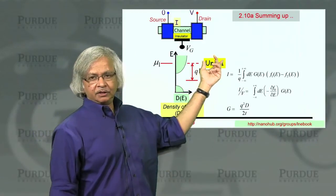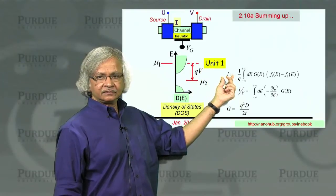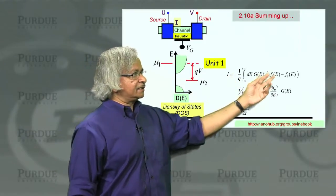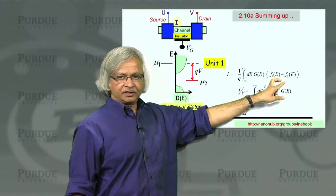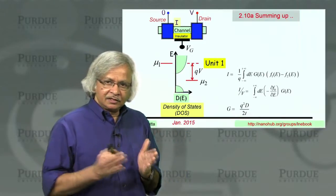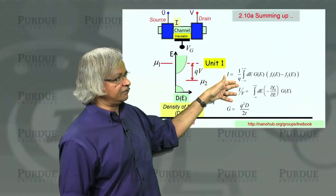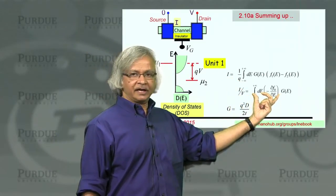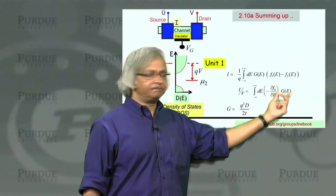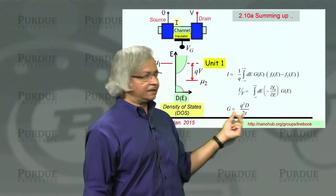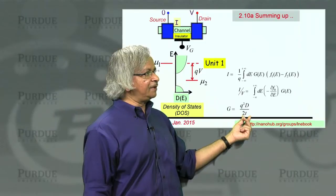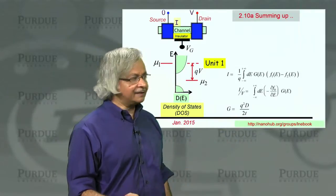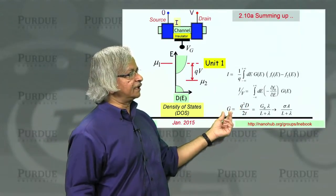In Unit 1, we showed that you could write the current in this form for an elastic or Landauer resistor. It's this difference of the two Fermi functions. You can use this low bias approximation to get an expression for the conductance, current divided by voltage, which is like an average over energy of a conductance function. That conductance function depends on the density of states and the time it takes for an electron to go through the channel.